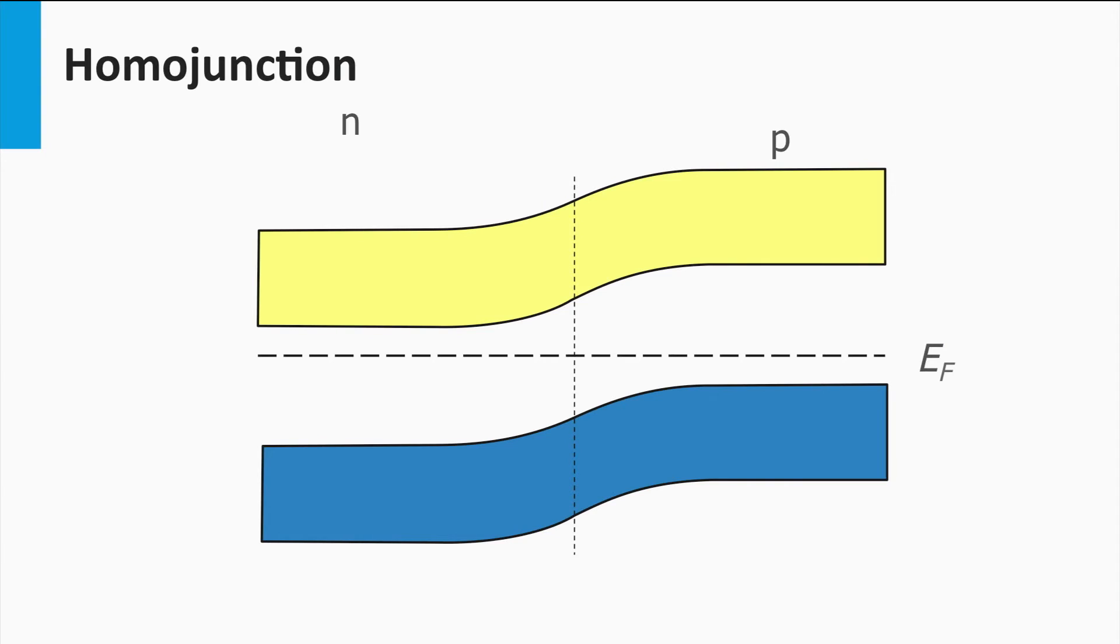So far, I have introduced you to the concept of P-N junctions with a depletion zone. These junctions are fabricated by different doping types within the same semiconductor material. This means the band gap in the P-N doped material is the same. Such P-N junction is called a homojunction.